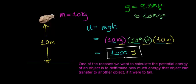One of the reasons we want to calculate the potential energy of an object is to determine how much energy that object can transfer to another object if it were to fall some distance. So this rock, because it's raised a distance of 10 meters above the Earth's surface, has the potential to transfer 1,000 joules of energy to another object. And that's why it's called potential energy — because it has the potential to transfer energy to another object.